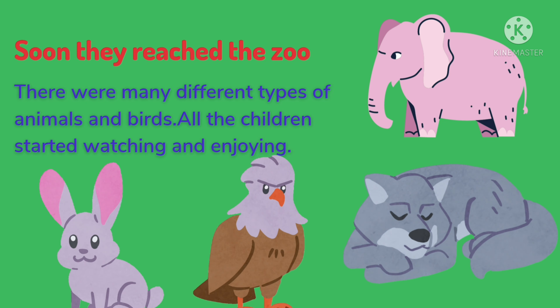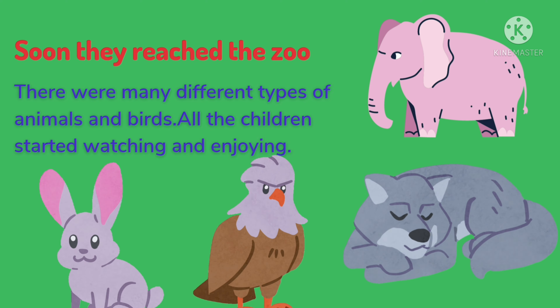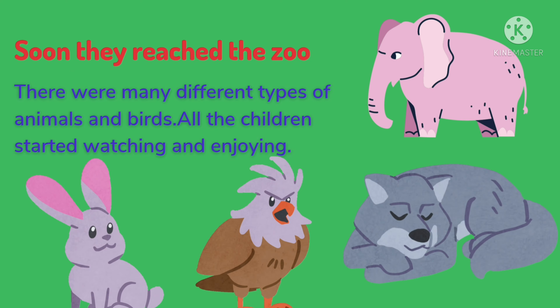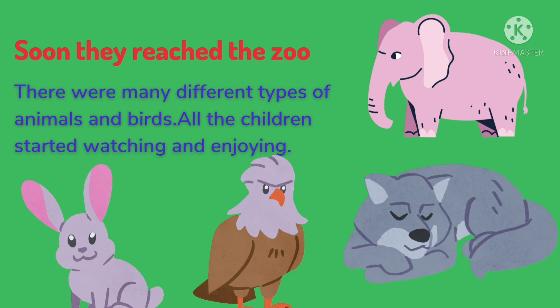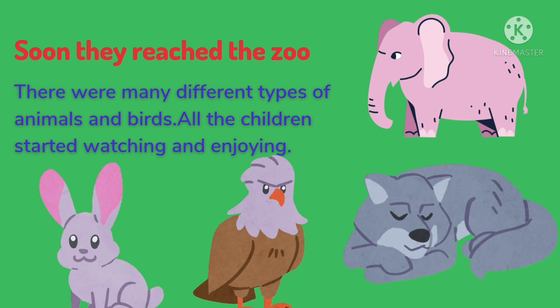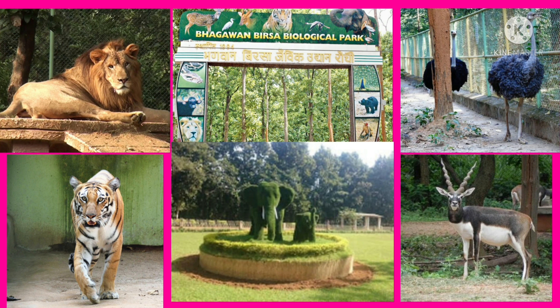Soon they reached the zoo. There were different types of animals and birds. All children started watching and enjoying. They saw lion, tiger, black buck, ostrich, and many more.